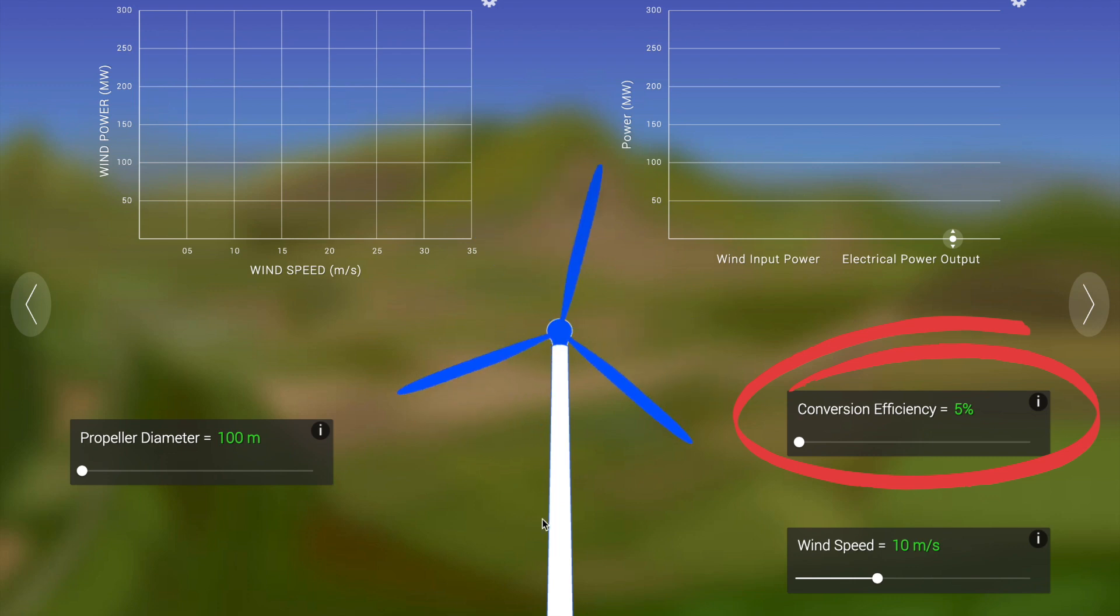The next thing is the conversion efficiency. Same with the propeller diameter, we want to control this variable. It just needs to remain the same throughout the entire investigation.